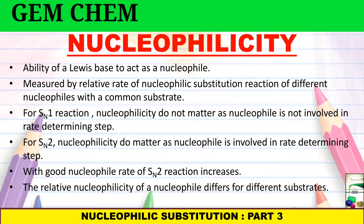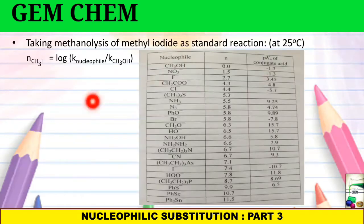Let us consider an example where we take methanolysis of methyl iodide as standard reaction and it is taking place at 25 degrees Celsius. We will compare with addition of methanol and removal of iodide and this is our standard reaction. In other cases, the nucleophile will be taken from this given list. If you can see here, N is actually log of K_nucleophile by K_CH3OH and with this factor N, it is actually the nucleophilicity factor.